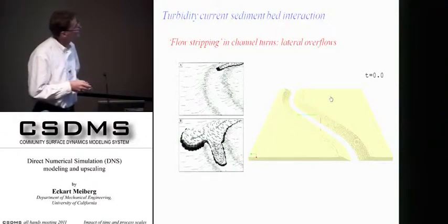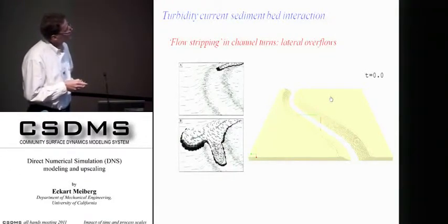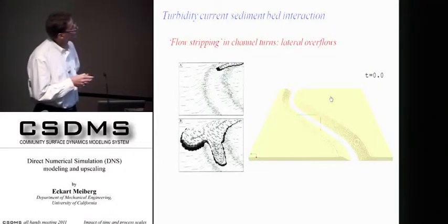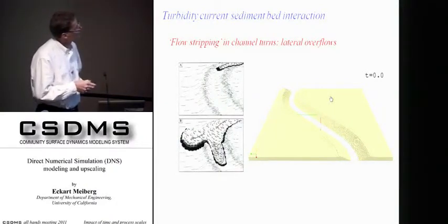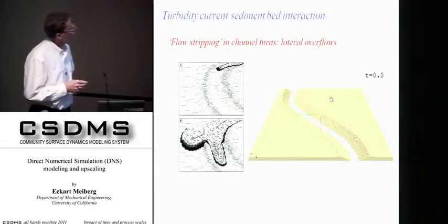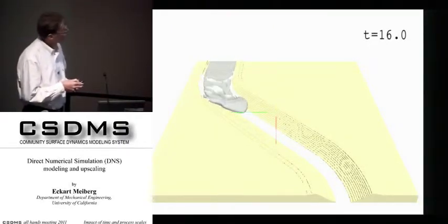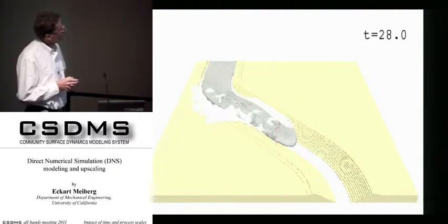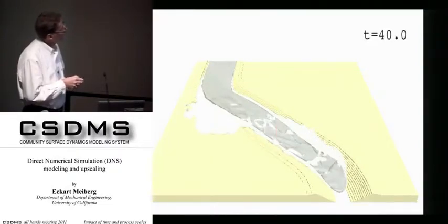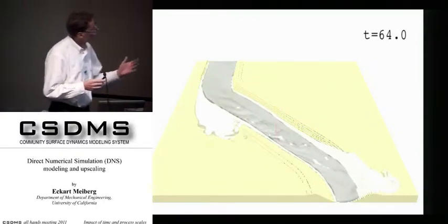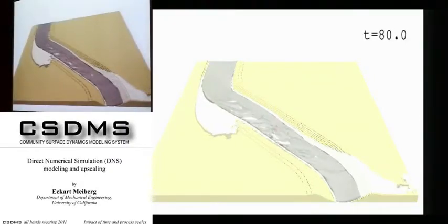Here is another DNS simulation — a turbidity current propagating down a submarine channel, with levees on both sides. People have speculated that when a turbidity current encounters a bend in the submarine channel, it might partially overflow, which is called flow stripping. We wanted to see if we observe that in the numerical simulations as well. Indeed, there is flow stripping occurring in the bends of the submarine channel, and we see that these things are being reproduced in quite some detail.